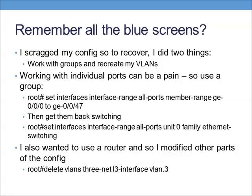What you can do is create a group. To recover, I created an interface range called 'all ports' and put all of the ports on the switch into that group. Then I went into the group and said: interfaces, interface range, all ports, unit zero, family, Ethernet switching — and hit enter. And then mystically, magically, presto, they're all back. Working with individual ports can be a real pain — on a 48-port switch, you don't want to go into each individual port and tell it what VLAN it belongs to, particularly with the lengthy commands on Junipers.